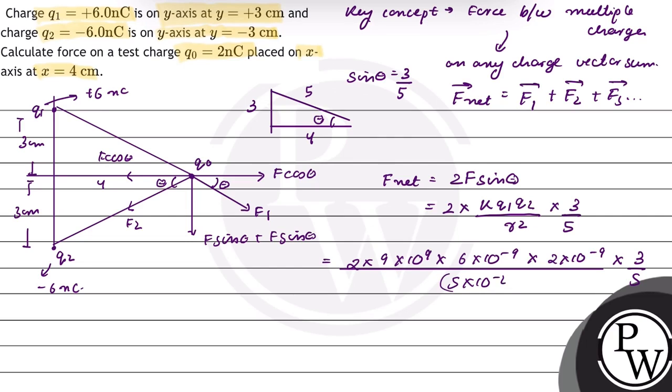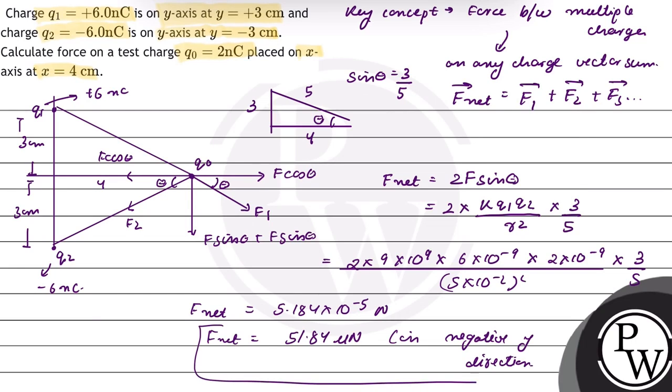On solving, F net equals 5.184 times 10 to the power minus 5 Newton, or 51.84 micronewton in negative y-direction. Hope you understood this well. Best of luck.